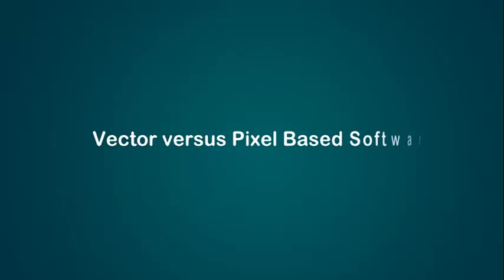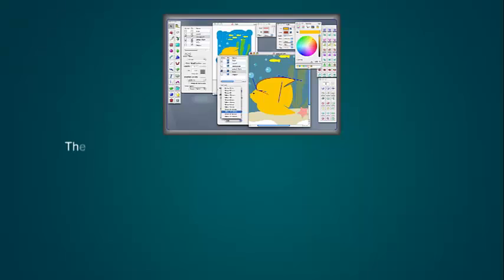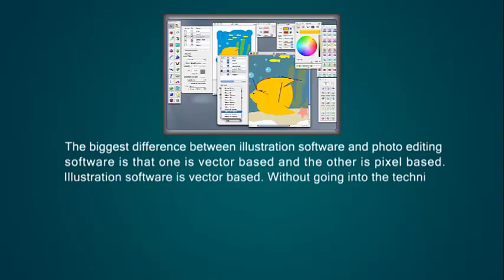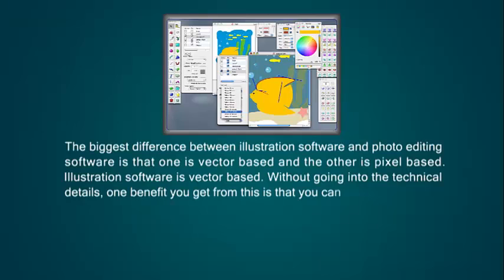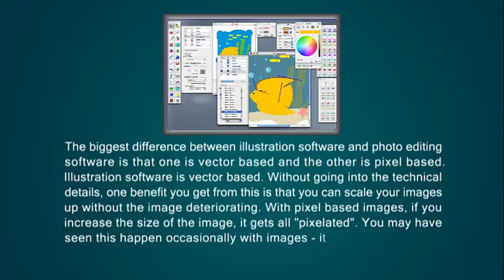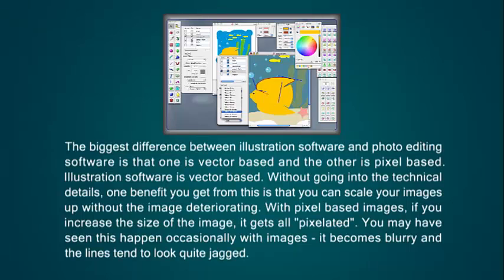Vector vs Pixel Based Software. The biggest difference between illustration software and photo editing software is that one is vector based and the other is pixel based. Illustration software is vector based. Without going into the technical details, one benefit you get from this is that you can scale your images up without the image deteriorating. With pixel based images, if you increase the size of the image, it gets pixelated — it becomes blurry and the lines tend to look quite jagged.